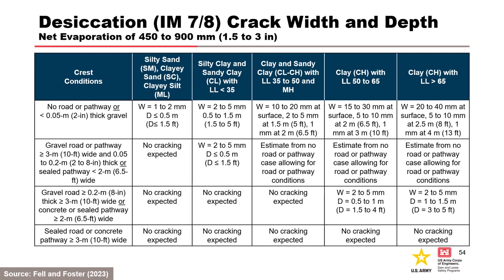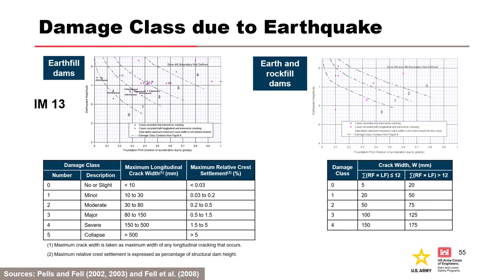Tables for estimating crack width and depth due to desiccation were recently developed by Fell and Foster based on case data: the higher the liquid limit, the wider and deeper the desiccation crack, and thicker gravel roads limit crack size. Desiccation cracking is not expected beneath sealed roads or concrete pavements. Pels and Fell (2002, 2003) and Fell et al. 2008 developed a methodology for IM-13 seismic cracking, estimating likely damage class based on PGA on bedrock and moment magnitude, then using judgment to estimate crack width and depth considering other potential failure modes. These figures apply to earth-fill and rock-fill dams.